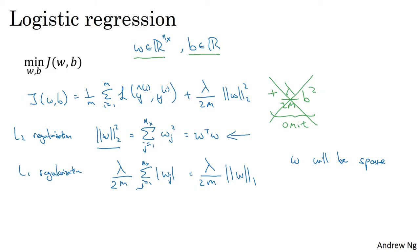One last detail: lambda is called the regularization parameter. Usually, you set this using your development set or holdout cross-validation, trying a variety of values to find the best trade-off between doing well on your training set and keeping the norm of your parameters small to prevent overfitting. Lambda is another hyperparameter you might have to tune. By the way, lambda is a reserved keyword in Python, so in the programming exercises we'll use lambd without the A. This is how you implement L2 regularization for logistic regression.